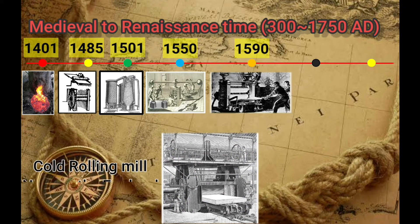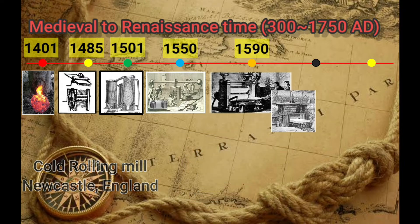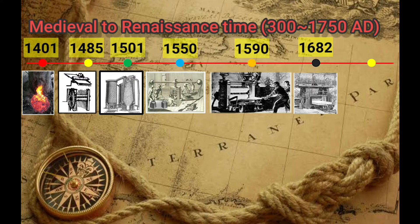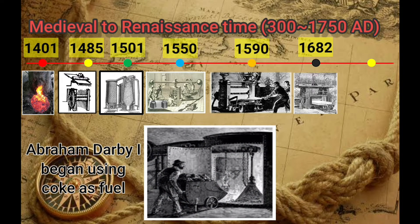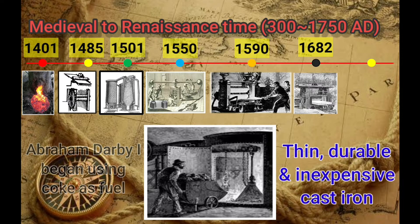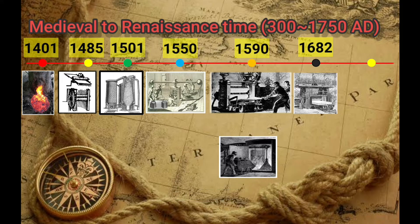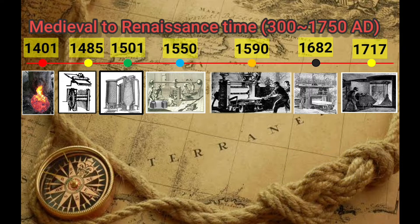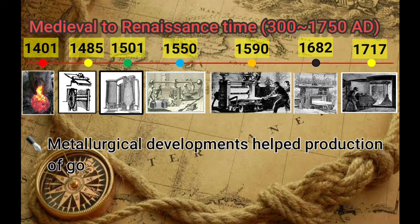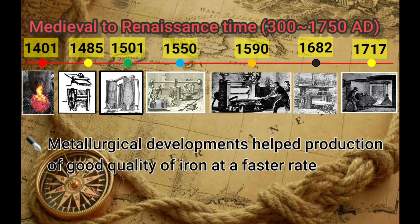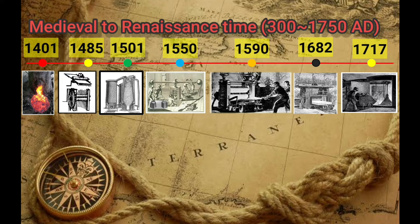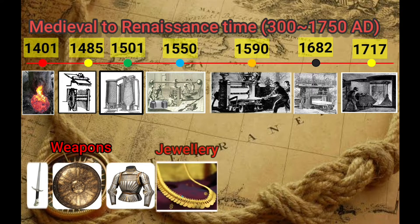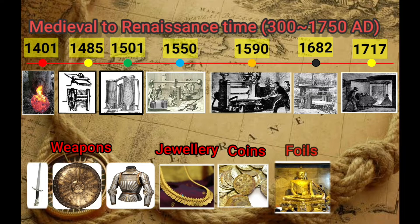A cold rolling mill was invented in Newcastle in 1682. In 1717, Abraham Darby first began producing cast iron using coke for the smelting process, meeting his goal to produce thin, durable and inexpensive cast iron. These key milestones affected the production of good quality iron at a faster rate, and transformation from handwork to rolling of metals to get more uniform metal sheets. The major applications were weapons, jewelry, coins, foils and utensils.